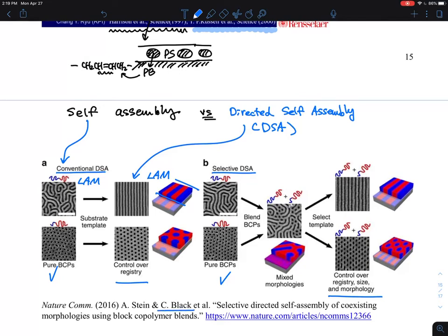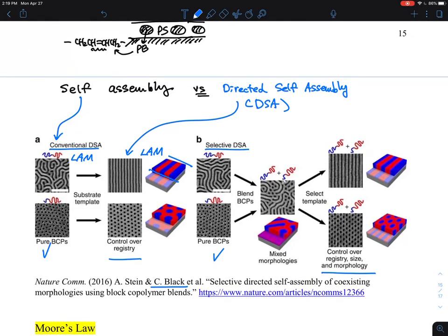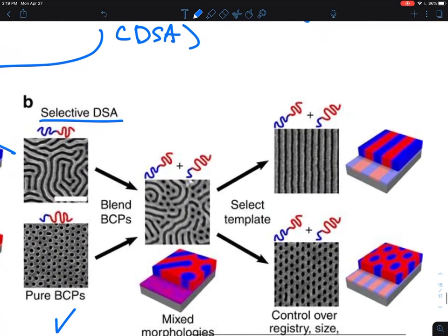This is by Chuck Black. I think he was at IBM. You can look at the article more in detail. But the efforts here are trying to make this size smaller and smaller so you can really make these line features that you can write as small as possible.